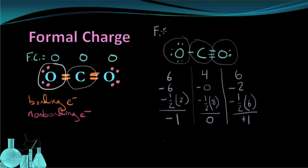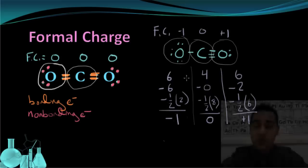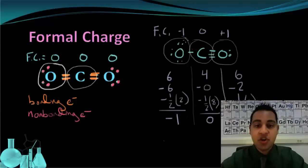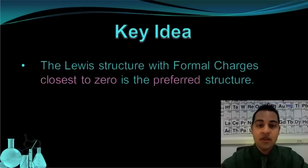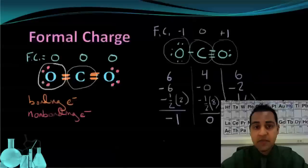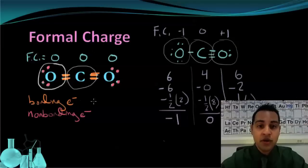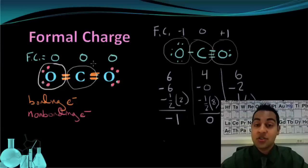So the formal charges for the alternative Lewis structure are negative 1, 0, and positive 1. We've now figured out the formal charges on each atom for each Lewis structure. The key idea is that the Lewis structure with formal charges closest to 0 is the preferred structure. So the original CO₂ structure with two double bonds is preferred because all formal charges are 0 — you can't get much closer to 0 than that.